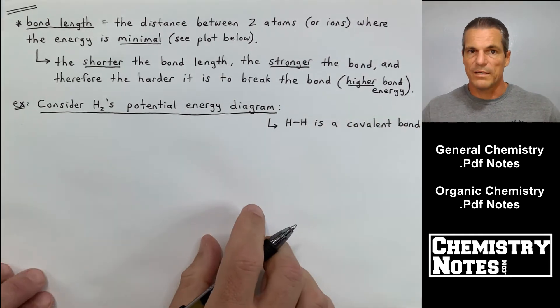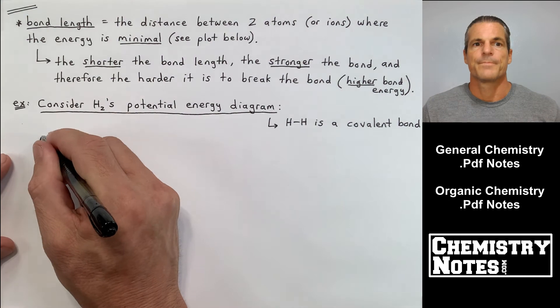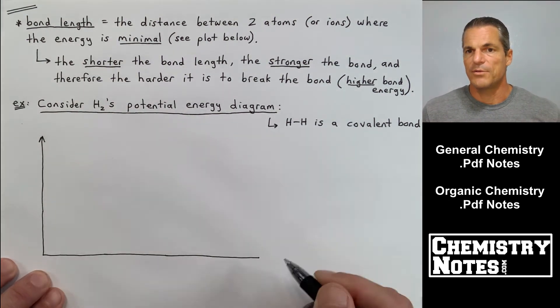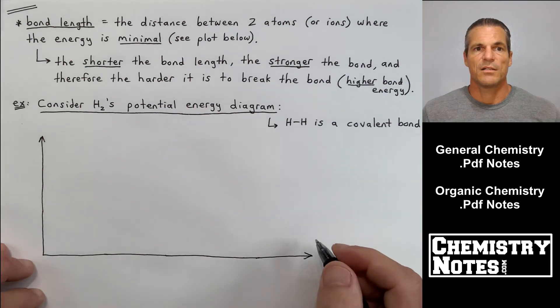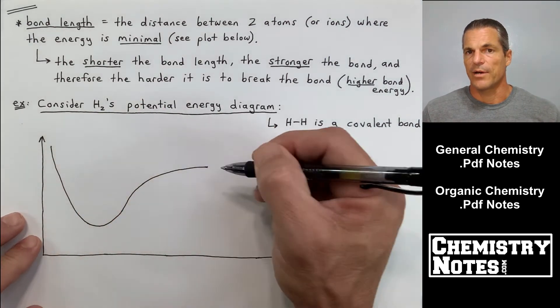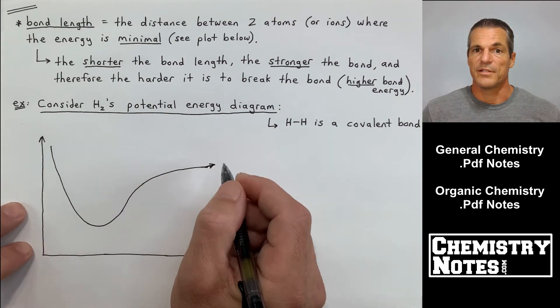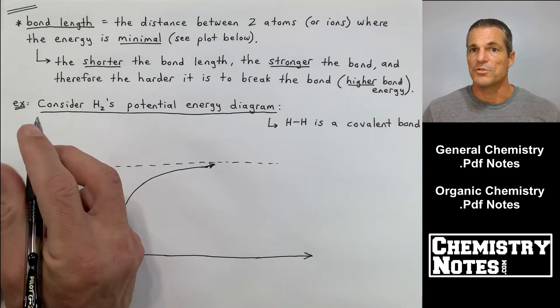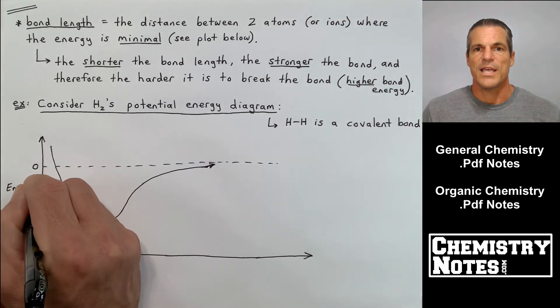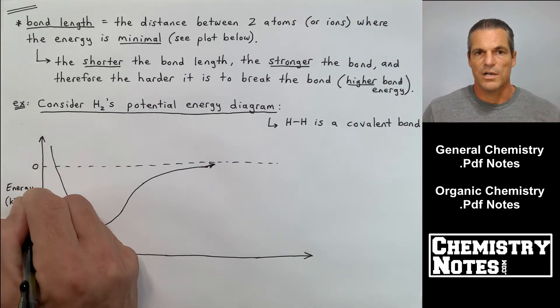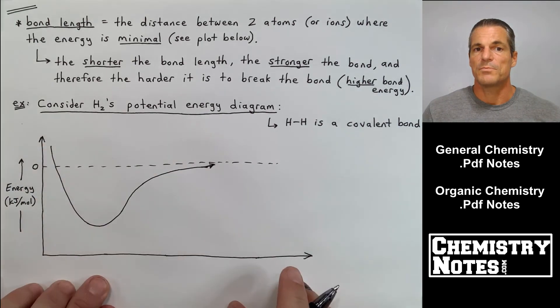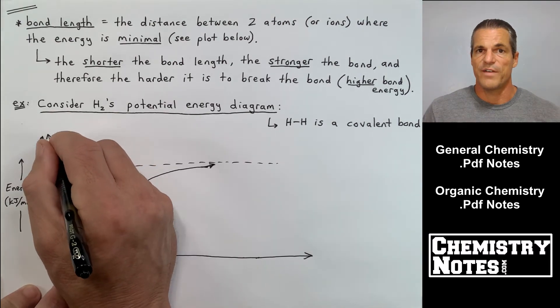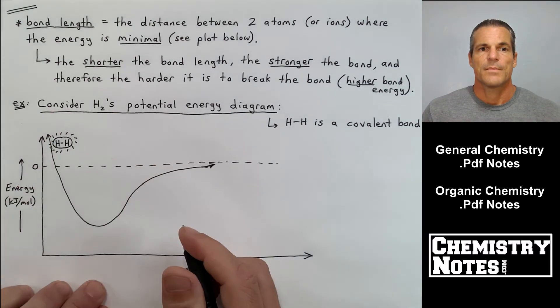As an example to show bond length and bond energy and the relationship between the two, let's look at hydrogen's potential energy diagram. This is the molecule hydrogen, H2. H—H, anytime you draw a dash, that's a covalent bond. This is H2's potential energy diagram. You see the trough down there, lower than zero, and I'm drawing HH with sun rays, which means it's really highly stressed.